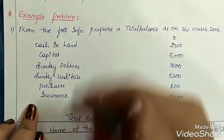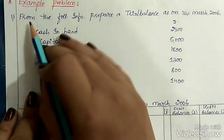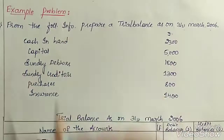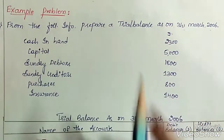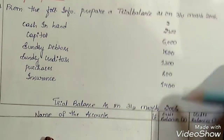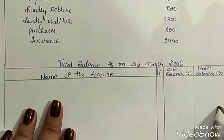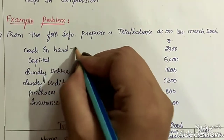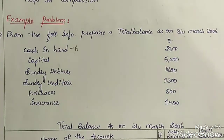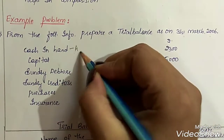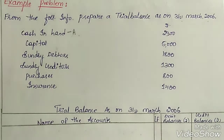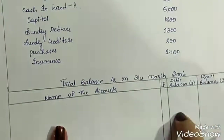Let's have a look at a small example of trial balance. From the following information, prepare a trial balance as on 31st March 2006. Here is the list of closing balances of accounts directly given to us. We just need to mention the name of the accounts in the particulars column, then record the amount on either the debit or credit side. The first item is cash in hand. Cash is an asset, and assets should be recorded on the debit side because they have debit balance. So cash in hand — rupees 2300 on the debit side.